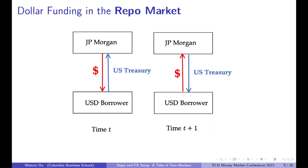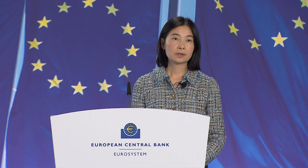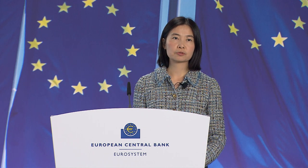Let's start with the overview of the two markets. This is the basic cash flow diagram for short-term funding markets. Taking JP Morgan as the dollar lender in the US dollar repo market with some USD borrower — which doesn't have to be a US person. At time t, JP Morgan gives dollar cash to the USD borrower as a repo loan — reverse repo on JP Morgan's books — and the USD borrower pledges US Treasury as collateral. At T plus one, the cash flow reverses: the USD borrower returns the dollar cash and JP Morgan returns the collateral.